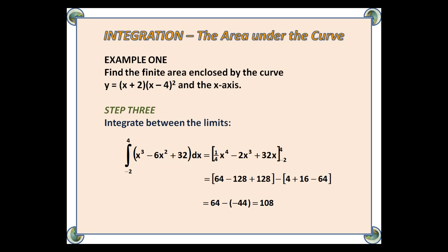When we stick -2 into that, we get 4 + 16 - 64. Put a minus sign in between these two brackets, and the final answer is 64 - (-44), which is 108.